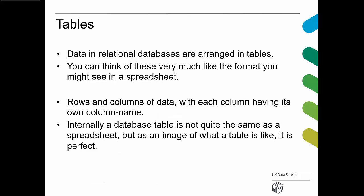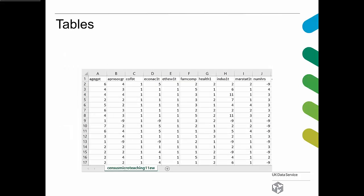Tables: data in a relational database are stored in tables. Think of these much like the format you might see in a spreadsheet — rows and columns, where each column has its own column name. Internally a database table is not quite the same as a spreadsheet, but it's a very good image of what the table is like. Here's a picture of an Excel spreadsheet showing the data we're going to look at later in our database, with column names and rows of data within the columns.